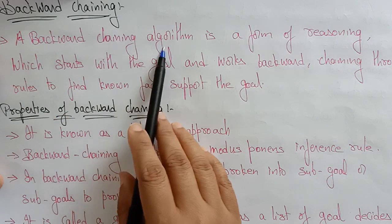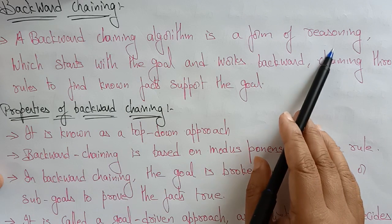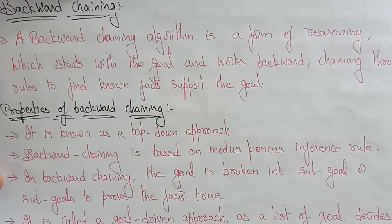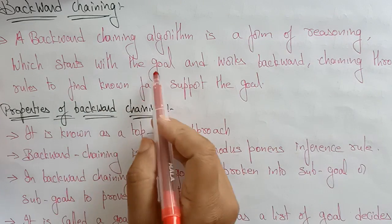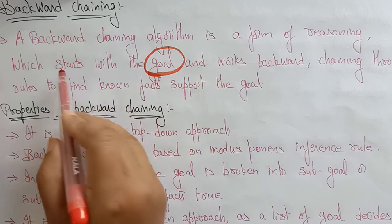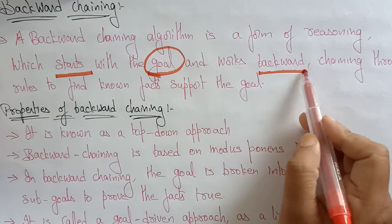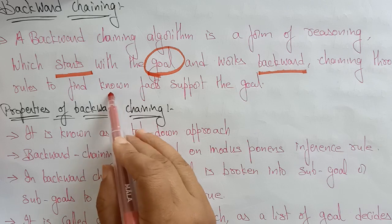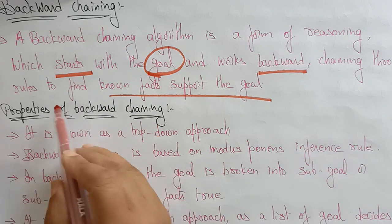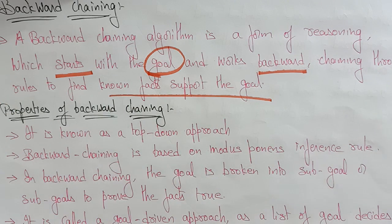A backward chaining algorithm is a form of reasoning, so backward chaining is also called backward reasoning. It is a form of reasoning which starts with the goal and works backward, chaining through rules to find known facts that support the goal. Finding those known facts which support the goal is our aim in backward chaining.